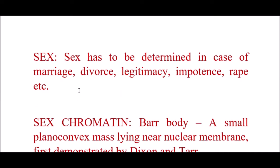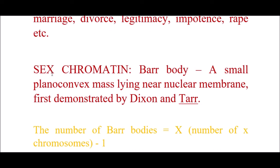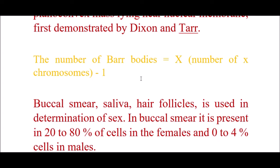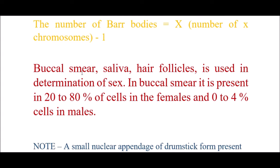The third criteria is sex. Sex has to be determined in cases of marriage, divorce, legitimacy, impotence, or rape. Sex chromatins or Barr bodies are small plano-convex masses lying near the nuclear membrane, first demonstrated by Dixon and Barr. The number of Barr bodies in a person is the total number of X chromosomes minus one, as it is an inactivated X chromosome. Barr bodies can be determined from buccal smear, saliva, and hair follicle. In buccal smear, they are present in about 20 to 80% of cells in females and 0.0 to 4% in males.